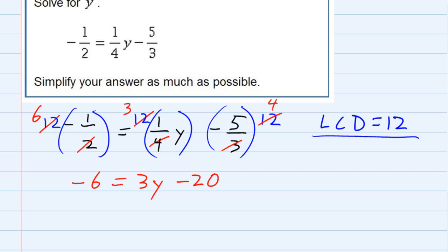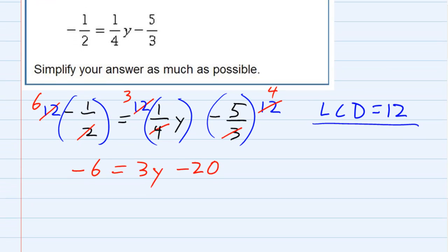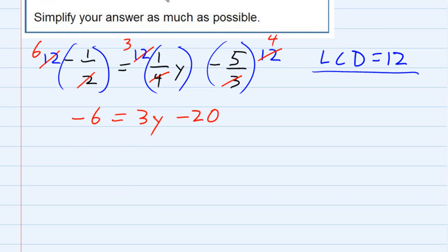So now we have gotten rid of all of our fractions. We can just concentrate on solving this for y. So the first thing that I want to do is I'm trying to get the three y by itself. I want to move the terms that don't have y's to the opposite side. So I want to move this 20 over, and I'm going to do the opposite. I'm going to add 20, which I need to do to both sides.